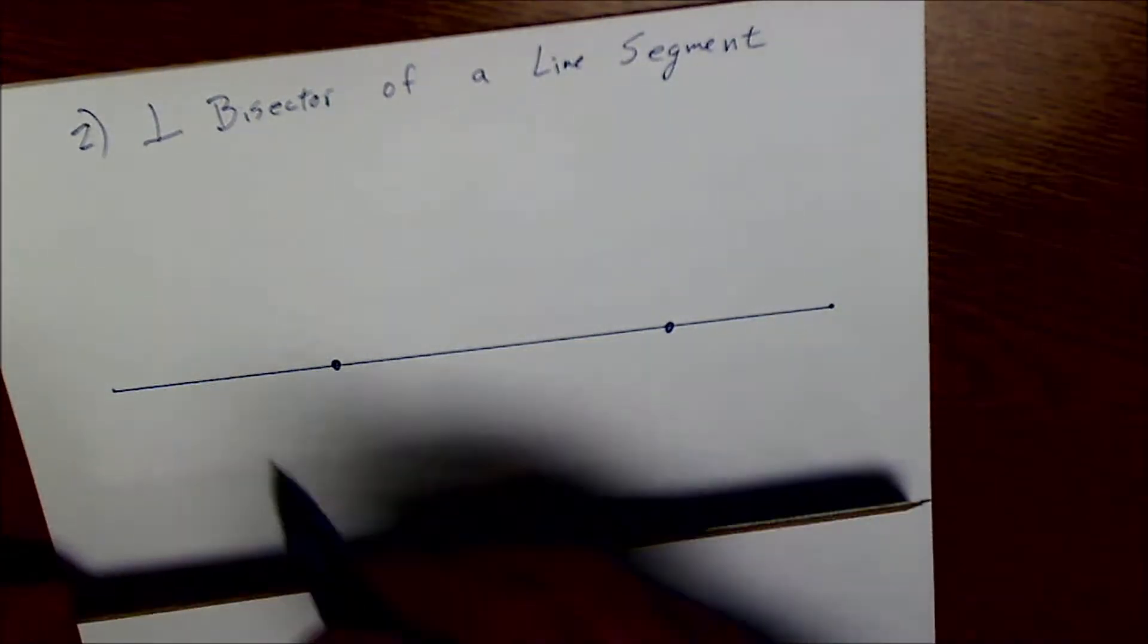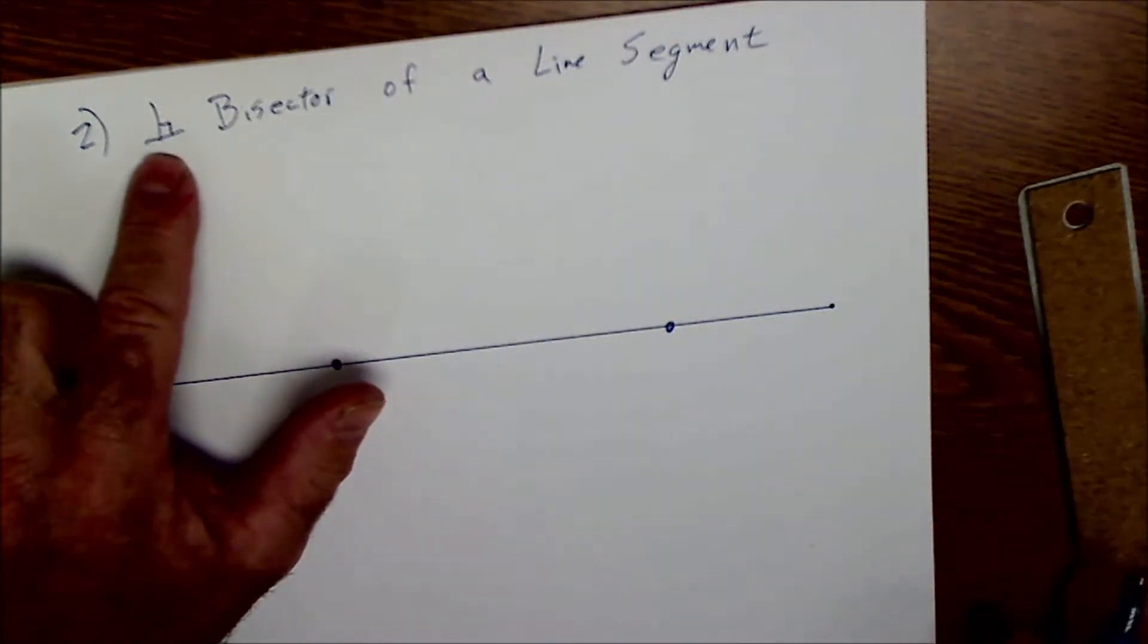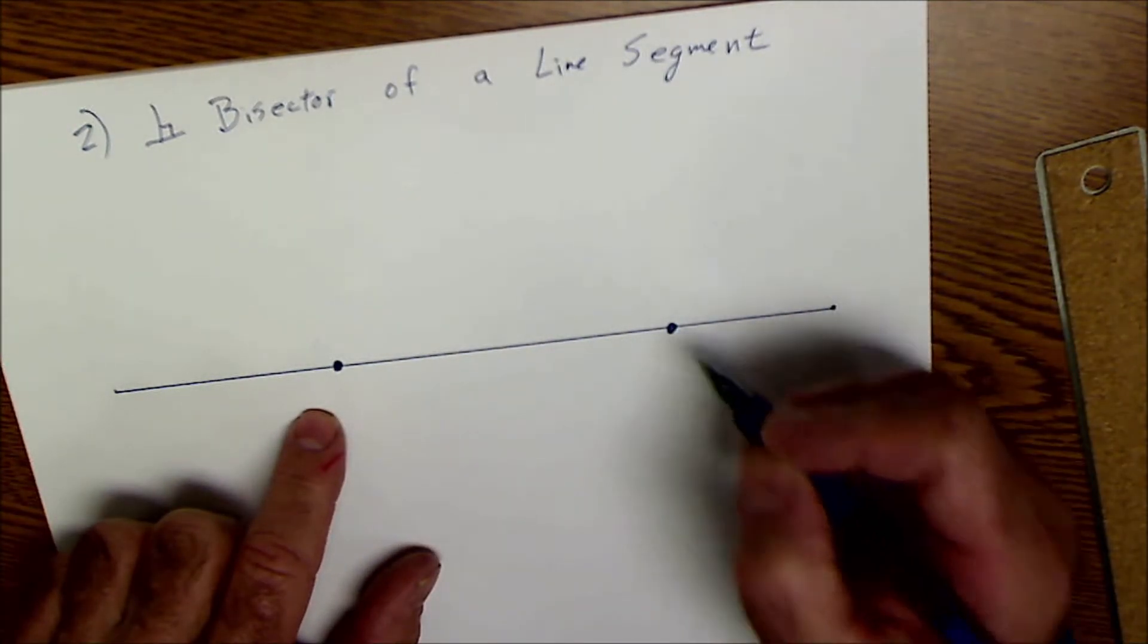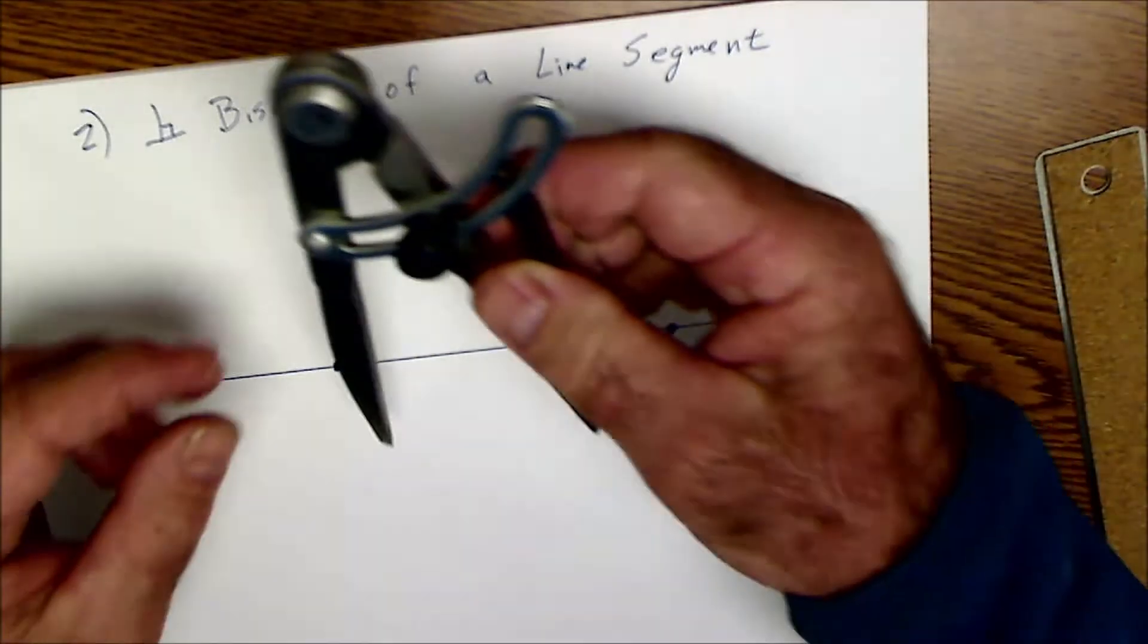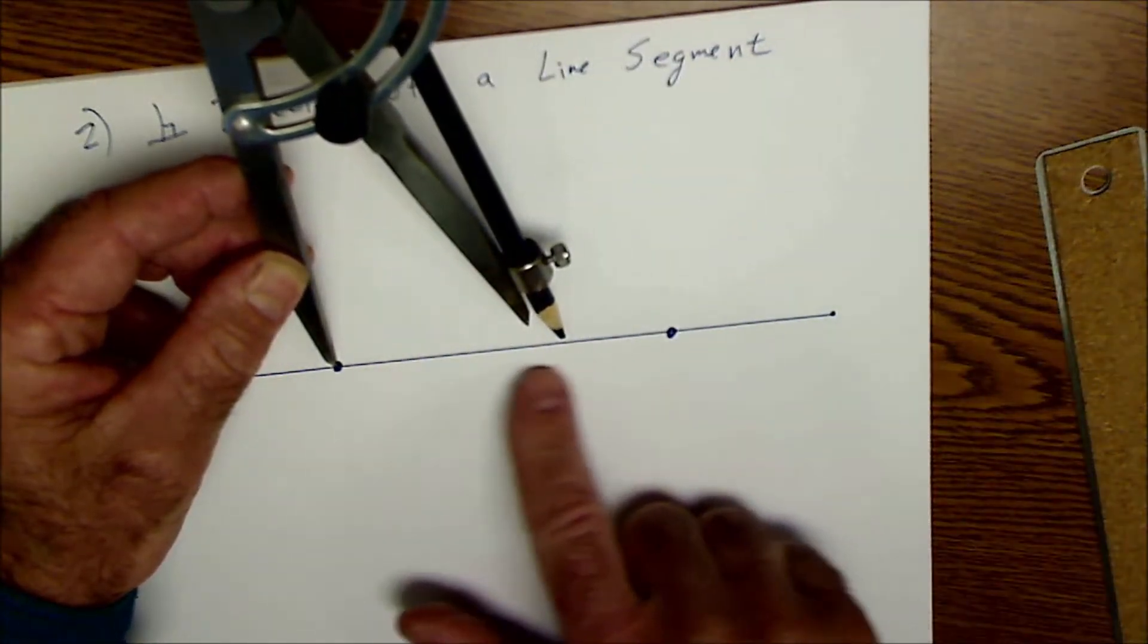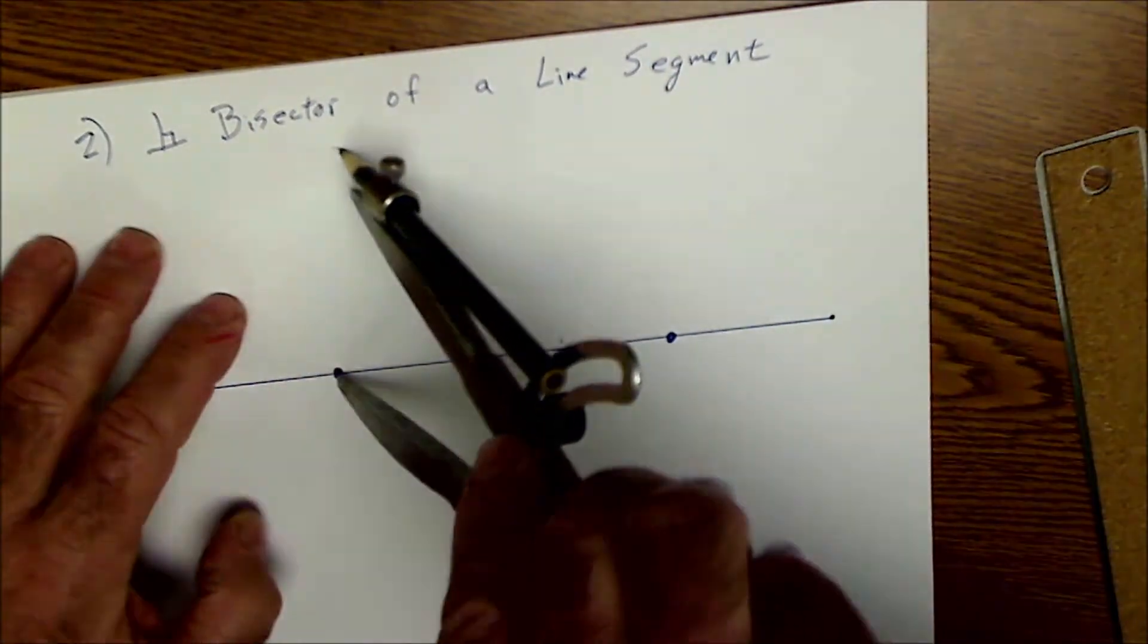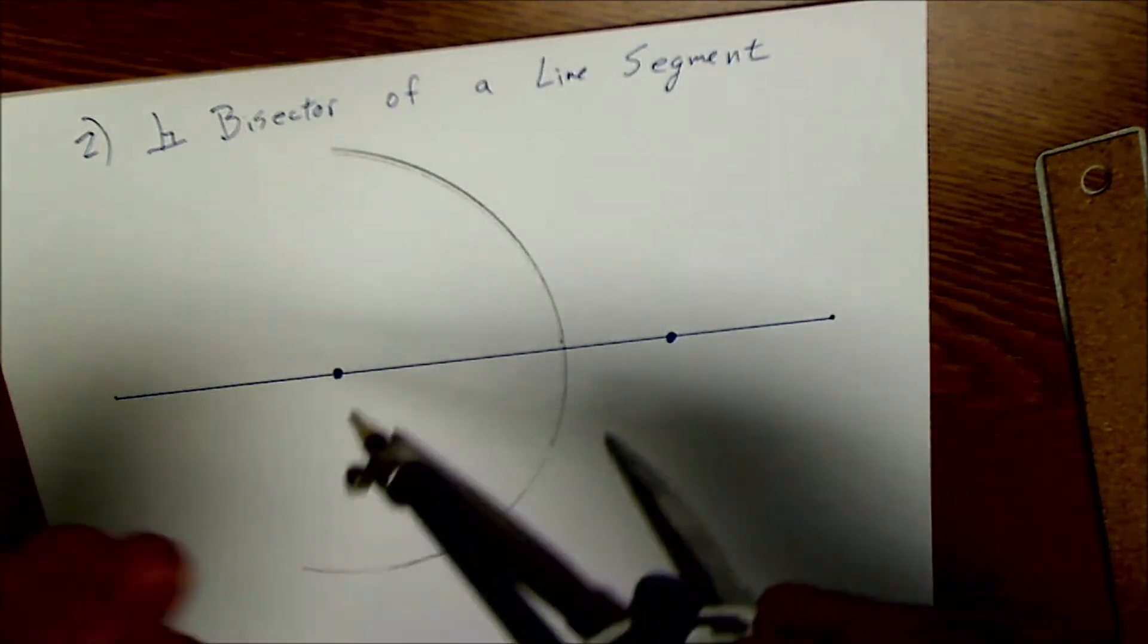Okay, number two is a perpendicular bisector of a line segment. This little notation right here means perpendicular exactly 90 degrees. Bisector means in two equal parts. Segment means it has a starting point and an ending point. So the way I find a perpendicular bisector of a line segment, I use my compass. It has to be set greater than half the distance. It doesn't matter how much more, but somewhere between the half and the full. And I hold it on one end of the line segment and I draw an arc.